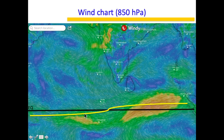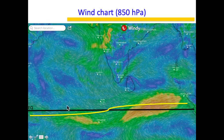Here I have indicated the ITCZ location using a yellow line. As you can see, in the West Indian Ocean the ITCZ is below the equator, and in the East Indian Ocean it is above the equator — this is very typical. The ITCZ can be undulating. You can see that the winds from the northern hemisphere are coming this way and the winds from the southern hemisphere are moving this way, and both of them are meeting at exactly this point.